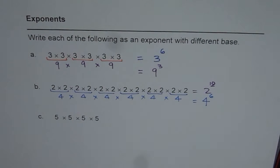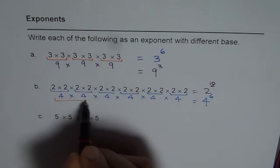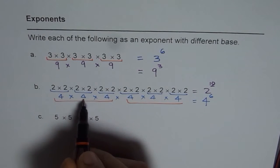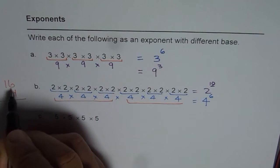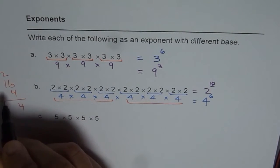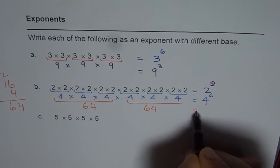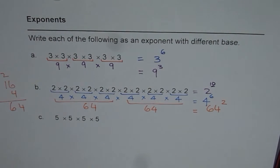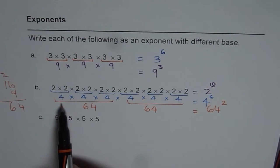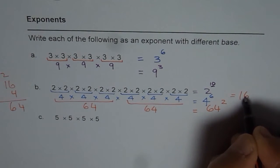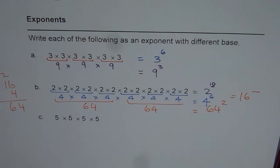Can we group the 4's also? Let's try it out. We can have 2 groups of 3 each. What is 4 times 4 times 4? 4 times 4 is 16, and 16 times 4: 4 times 6 is 24, carry the 2, and 4 times 1 plus 2 is 64. So we can write this as 64 times 64, or 64 squared. You could also group them in 2's: 4 times 4 is 16, so this could also be written as 16 to the power of what? That is an exercise for you.